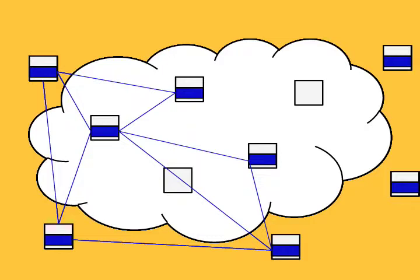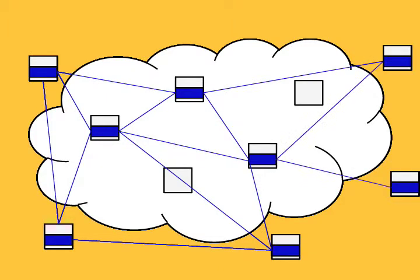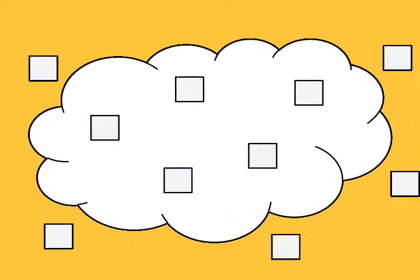A slice on a given node is a sliver. After nodes have been assigned to a slice, virtual servers for that slice are created on each of the assigned nodes. Slices have a finite lifetime and must be periodically renewed to remain valid. All data associated with a slice is deleted when the slice expires.